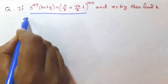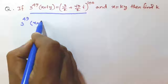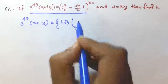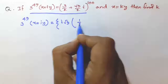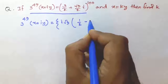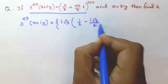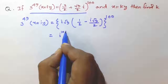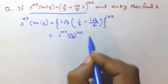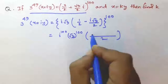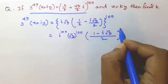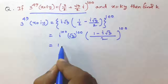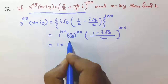3 to the power 49 into x plus iy is equal to — we take i root 3 common — so in bracket, half minus i root 3 divided by 2, whole to the power 100, which is equal to i to the power 100 into root 3 to the power 100 into 1 minus i root 3, whole to the power 100. Now, i to the power 100 is equal to 1, and root 3 to the power 100 means 3 to the power 50.